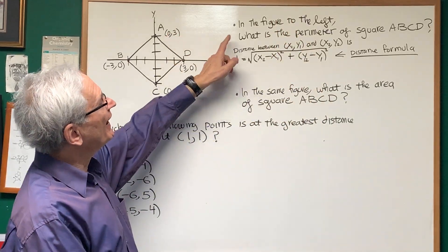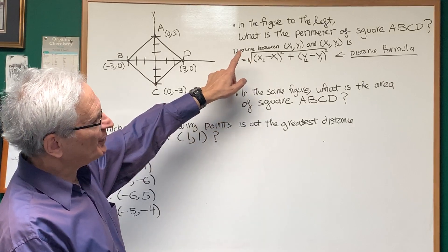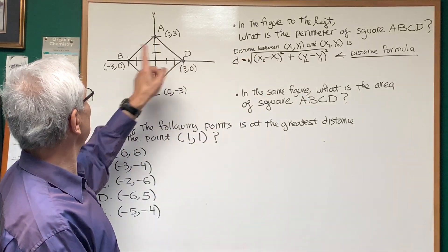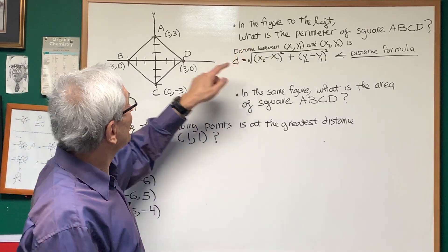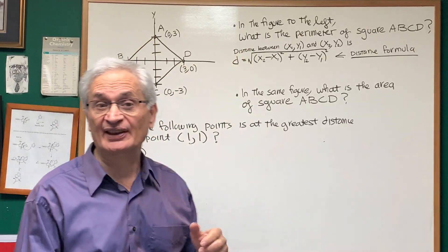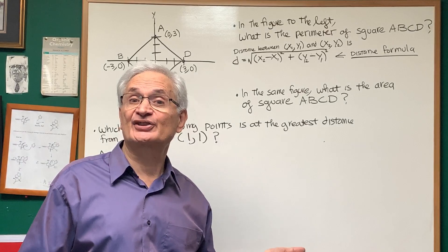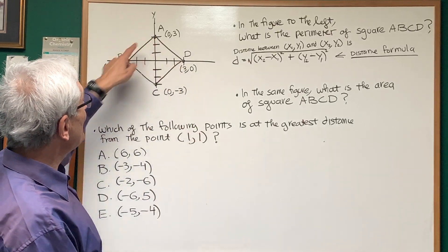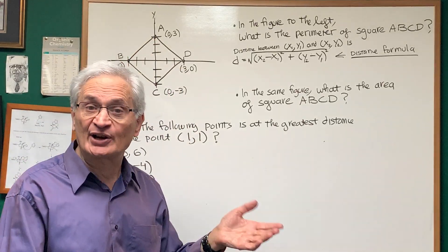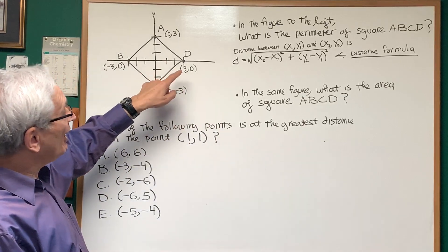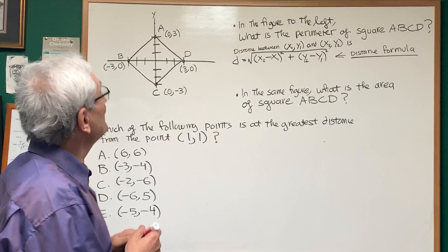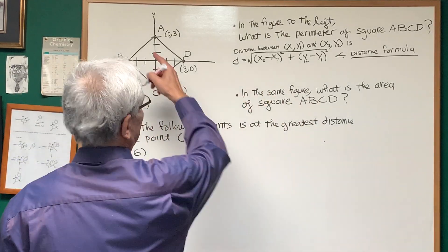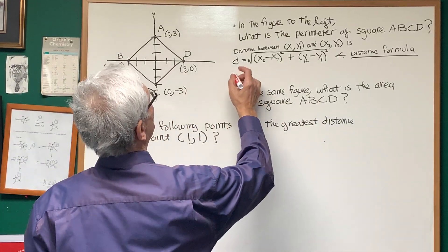In the figure to the left, what is the perimeter of square ABCD? Well, we want the perimeter, which means we're going to add up the side lengths of each of the sides of the square. Since a square is composed of four equal sides, all we have to do is apply the distance formula between two adjacent sides and we will get the distance of one of the sides. So let's see, the distance AD...